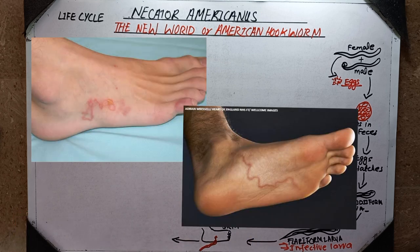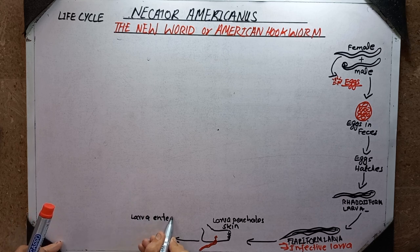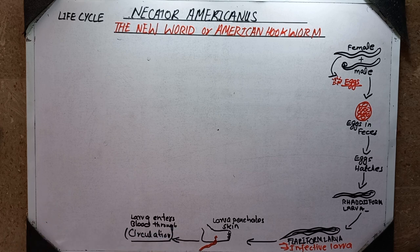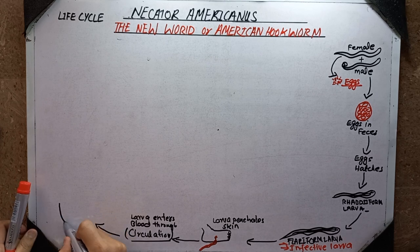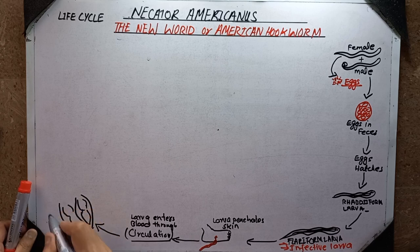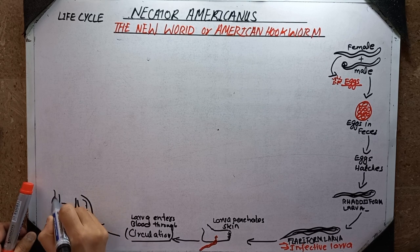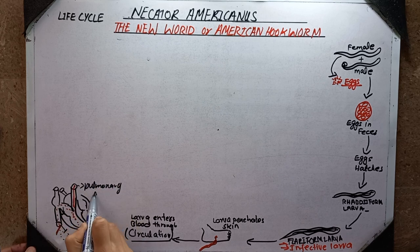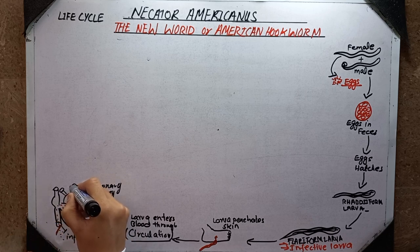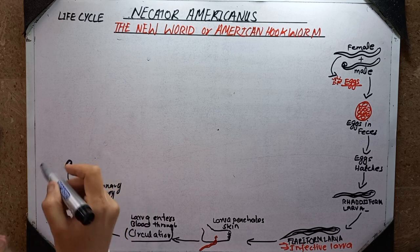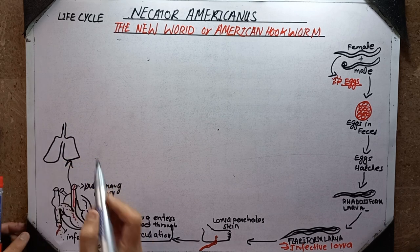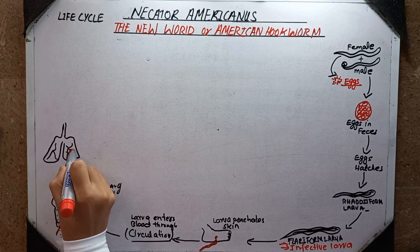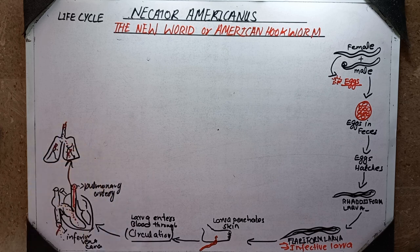After penetration, the larva moves through the blood vessels to the heart and then to the lungs. The larva enters the blood through the circulatory system, and the blood carries these larvae to the heart. In the heart, there are veins that collect blood from the whole body — the inferior vena cava collects blood from the lower half of the body. Blood enters the right atrium and then transfers to the lungs through the pulmonary artery.